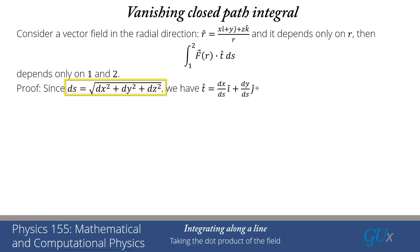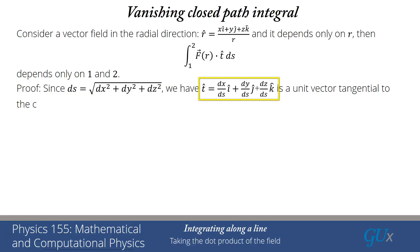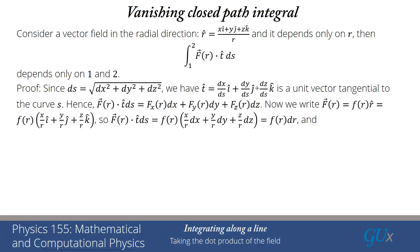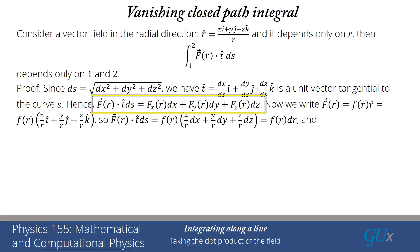We're working in three dimensions, so ds² equals dx² plus dy² plus dz². The tangent vector is (dx/ds) i-hat plus (dy/ds) j-hat plus (dz/ds) k-hat, which is tangential to the curve. It's a unit vector because its length is the square root of dx² plus dy² plus dz² divided by ds, and the square root of dx² plus dy² plus dz² equals ds, so numerator and denominator cancel. That's why t-hat is a unit vector. Now let's take the dot product with the vector field.